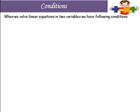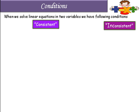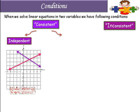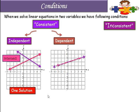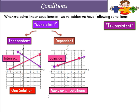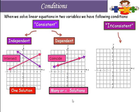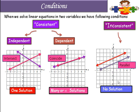Some conditions arise when we solve linear equations in two variables: consistent and inconsistent. The first condition is independent — when the two lines intersect each other, we get one unique solution. The second condition is dependent — when the two lines coincide with each other, we have many solutions or infinite solutions. And inconsistent means the two lines are parallel to each other, and there is no solution.